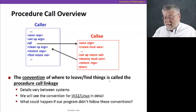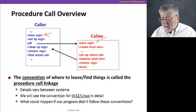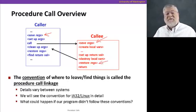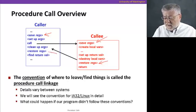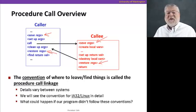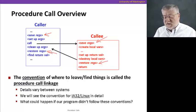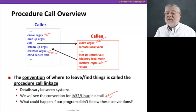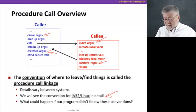We now embellish our diagram a little bit. We've added that maybe we need to save some registers before we get the call set up. The callee might want to save some other registers, and if it saves some, it needs to restore them before it returns so that the caller finds the same contents it started with. The caller may also want to restore some registers after the callee is done. This convention of where to find these things, where to save them, and how to coordinate all of this activity is called the procedure call linkage. We're gonna look at the detail for the IA32 Linux way of doing this, though every operating system and programming language has slight variations.